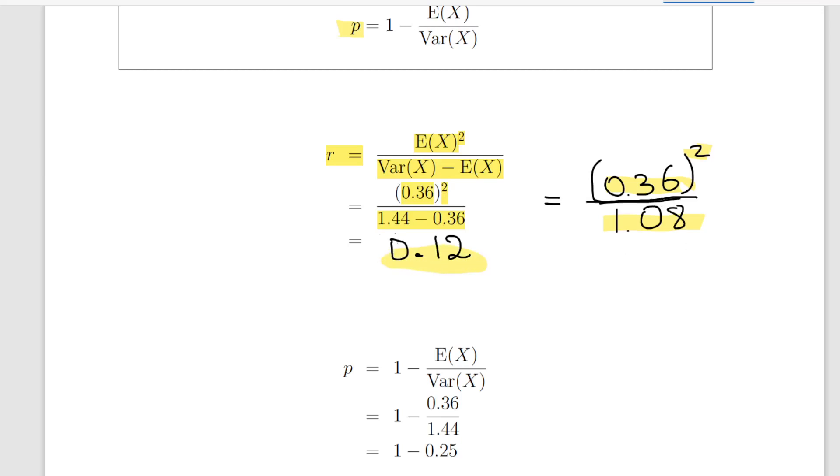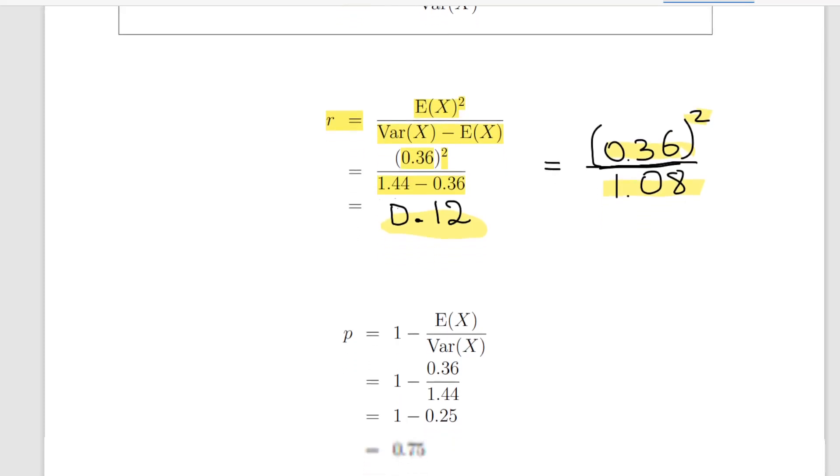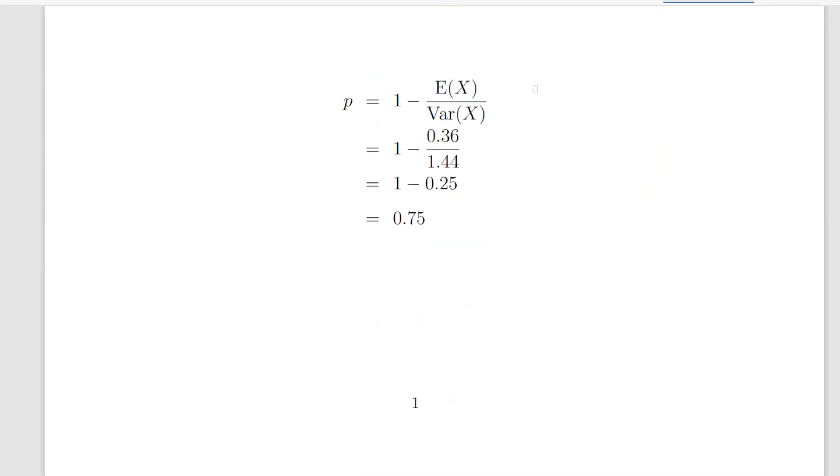Now we get the probability of p using the variance of X, the expected value of X, and the variance of X. 1 minus the expected value of X divided by the variance of X. That is 1 minus 0.36 divided by 1.44. 1 minus 0.25, that gives us a probability of 0.75.